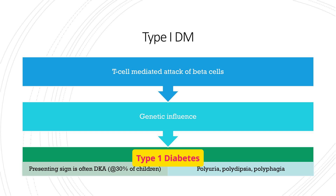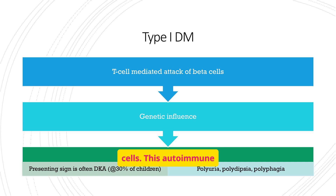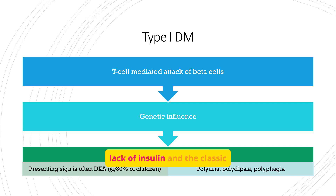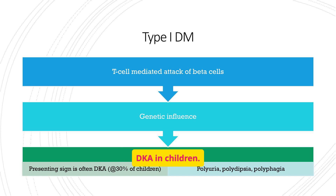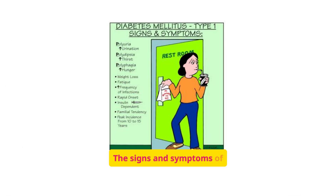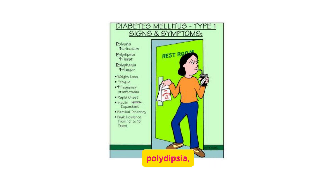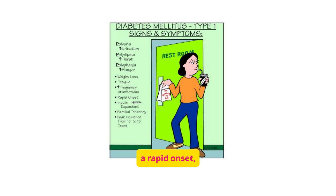Type 1 diabetes mellitus is characterized by a T-cell-mediated attack on beta cells. This autoimmune process, influenced by genetics, leads to a lack of insulin and the classic signs and symptoms, often presenting as DKA in children. The signs and symptoms include polyuria, polydipsia, polyphagia, weight loss, and fatigue. It often has a rapid onset, requires insulin dependence, and has a peak incidence between 10 and 15 years of age.